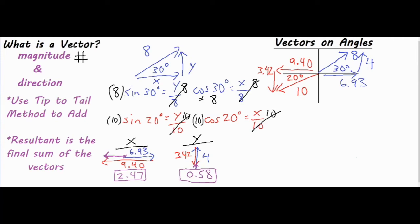So the method was: first find the x and y components of both right triangles, then use tip-to-tail to combine x components, then y components — that's the first and second use of tip-to-tail. The third use combines them into our final right triangle: 2.47 horizontal to the left and 0.58 going slightly upward.